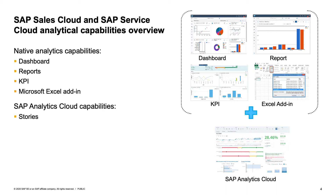I'll be covering the analytical capabilities of SAP Sales Cloud and SAP Service Cloud. We can classify this into two categories: native analytic capabilities and SAP analytics capabilities. In native analytics, we have a set of interfaces like dashboard, reports, key performance indicator, and Microsoft Excel add-in. For all these interfaces, there is one entity called data source, which acts as a data provider, giving information through key figures and characteristics from our database.